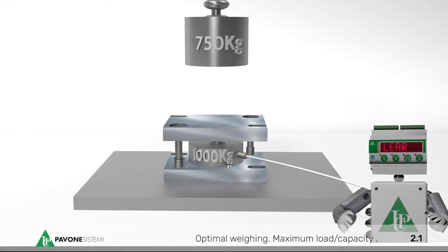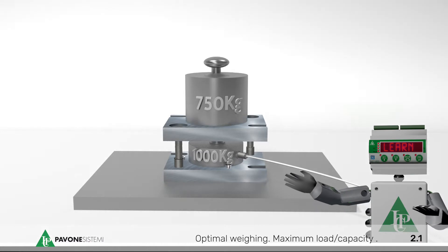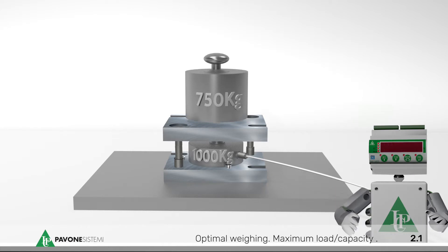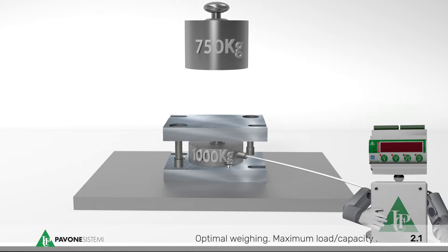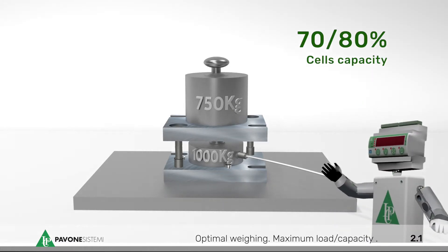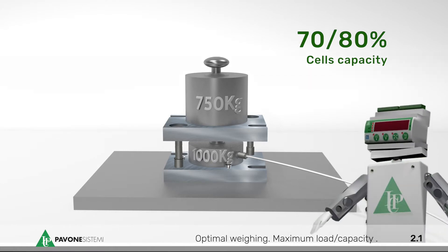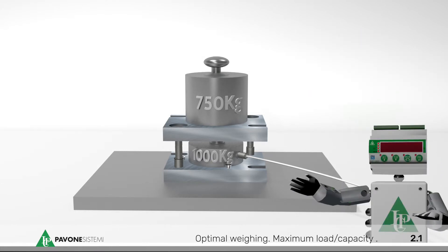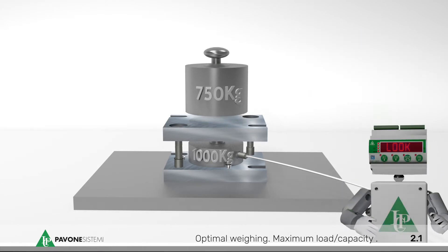The correct calculation of the capacity of the load cells is essential in order to get the best performance from the weighing system and to guarantee a long useful life to the same system. We recommend to use the load cells at a maximum of 70-80% of their normal capacity and to regularly check that they are correctly oriented while the installation is being carried out.